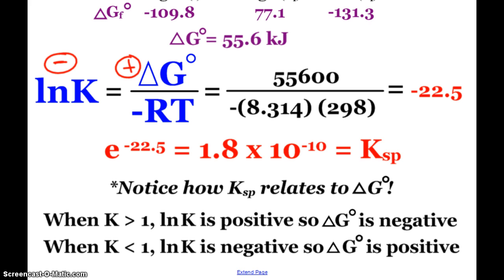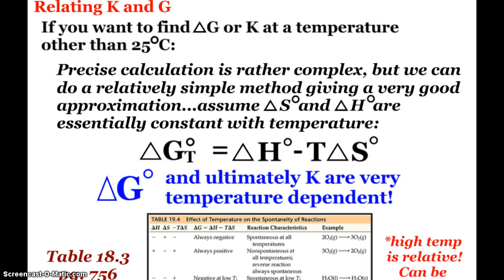That's okay and that helps us but this chart is going to be much more influential. So if you want to find delta G or K at a temperature other than 25 degrees Celsius, the real calculation is rather complex and beyond the scope of this course. But we can do a pretty simple method with an equation we're already familiar with and that gives us a pretty good approximation.